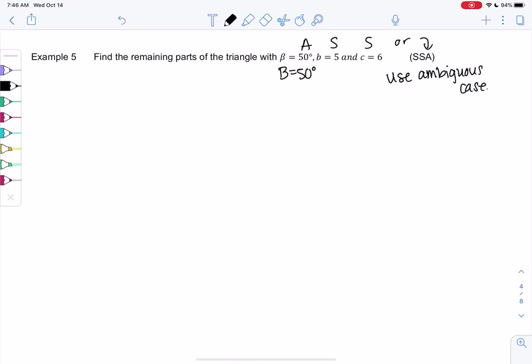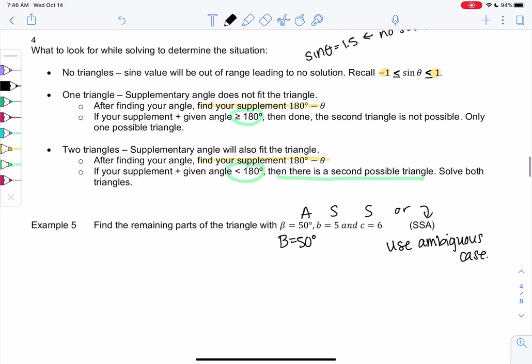So you only have to check the supplement in the ambiguous case. You don't have to do this for any of the other cases.